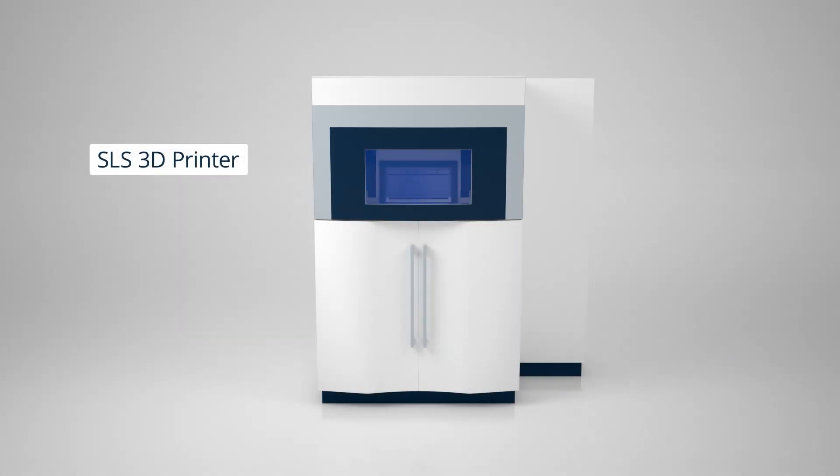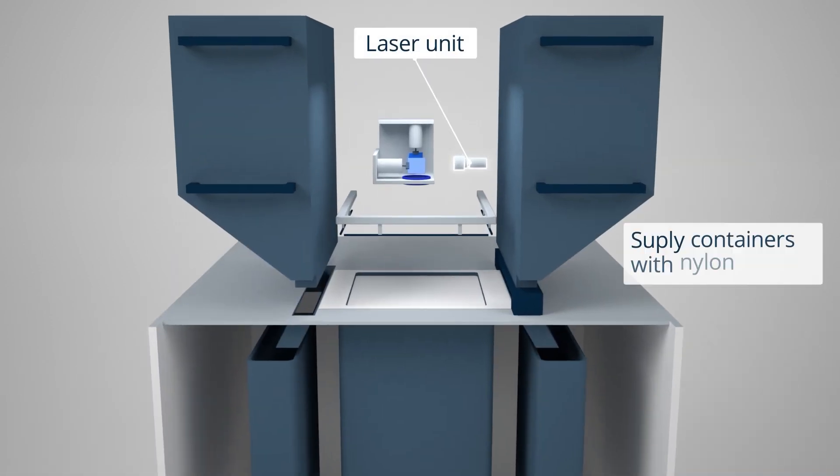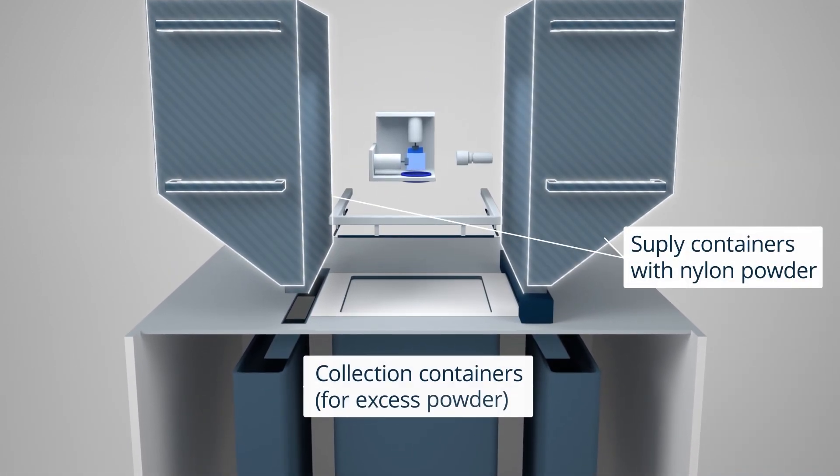Selective laser sintering is a laser powder bed fusion process that uses a high-power laser to sinter small particles of polymer powder, primarily nylon.